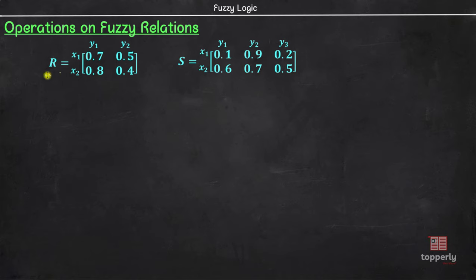So, let us rewrite R to include y3 also. So, we have R equal to x1, x2, y1, y2, y3, 0.7, 0.5, 0, 0.8, 0.4, 0. The reason why we have 0 membership value here is because there is no relation between x1 and y3 or x2 and y3 in the relation R defined here.